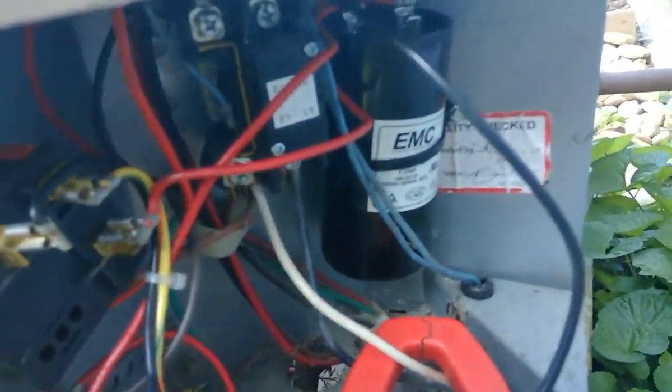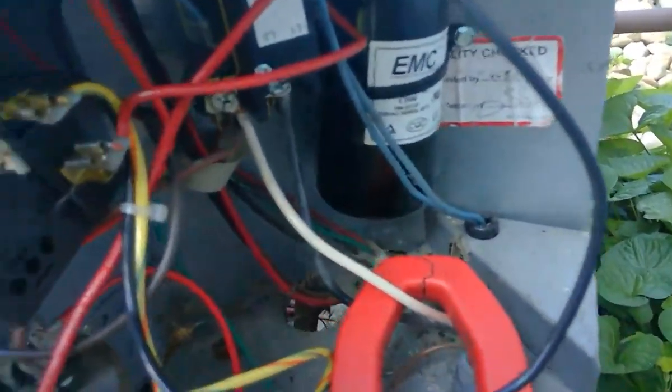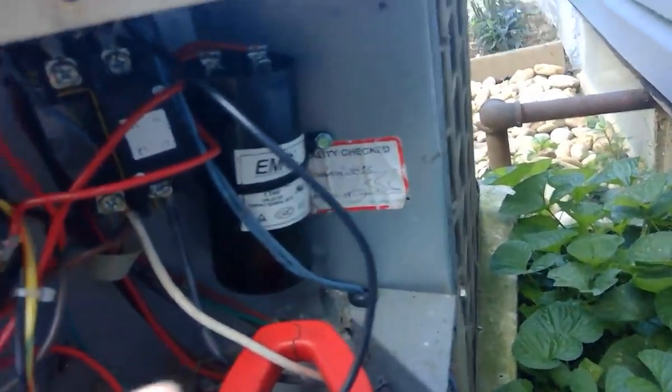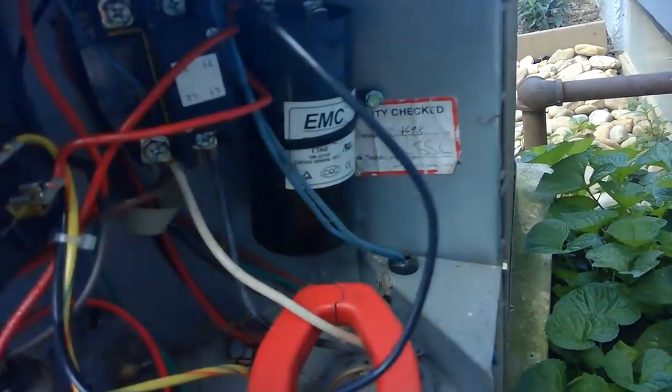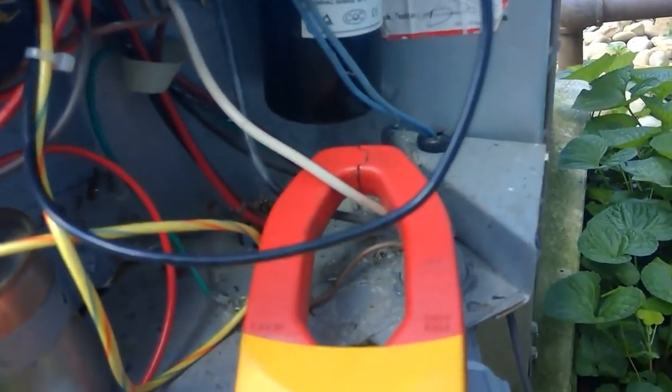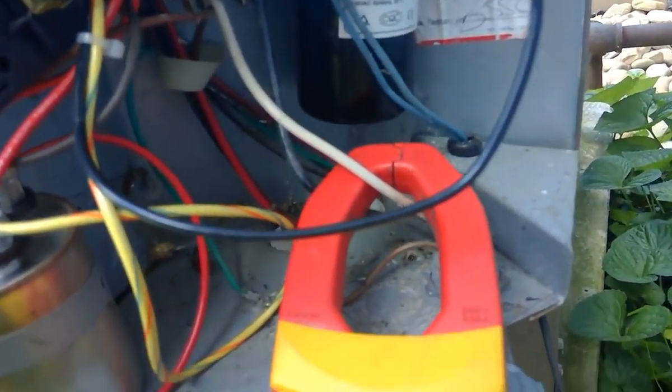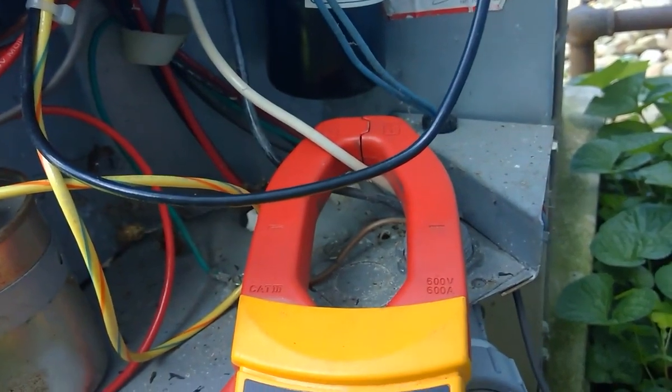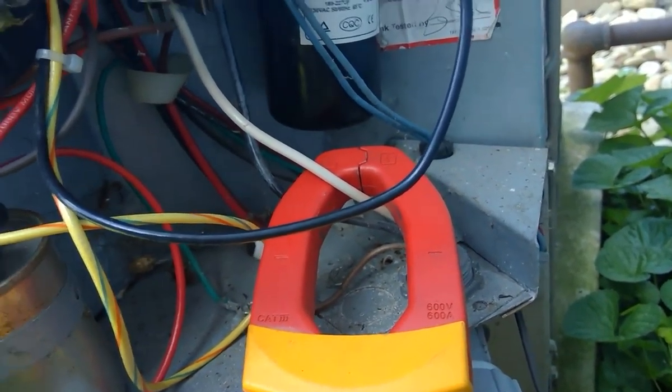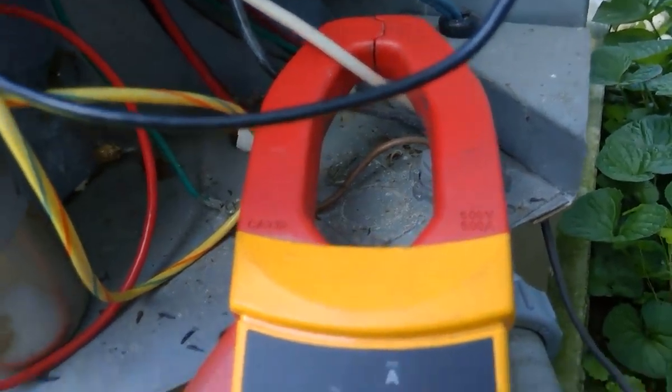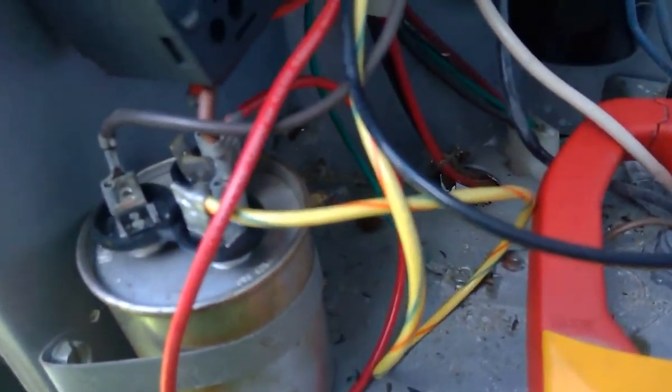So anyway, I did go ahead and get the 521 kit connected up. And if you can see right there, there's the relay. I put the capacitor over here, you can see over there. And basically wired it up according to the instructions. So the black goes to the contactor. The red goes to the common on the existing capacitor. And the yellow goes to the herm on the existing capacitor.